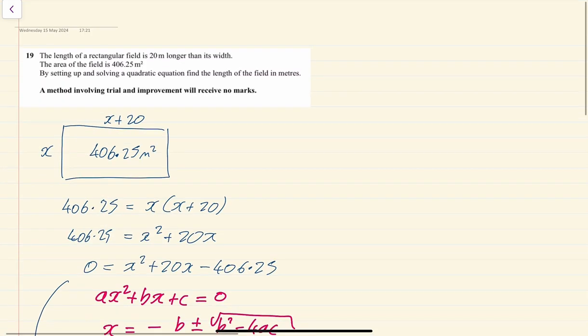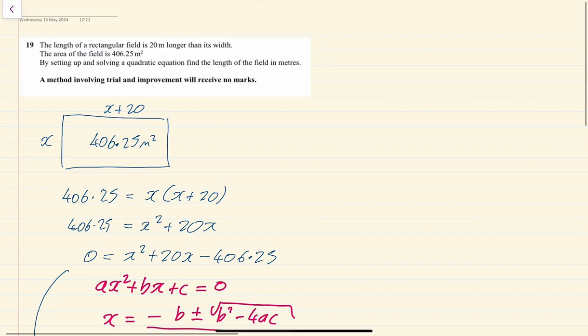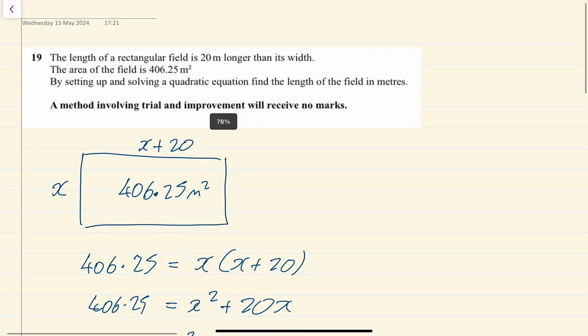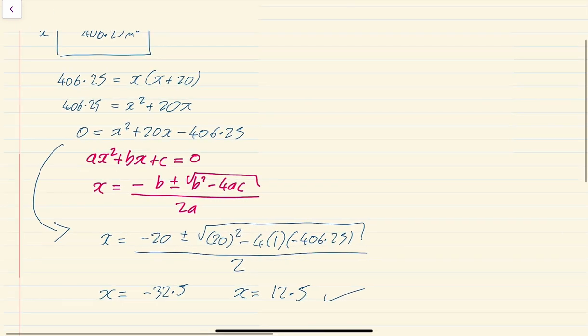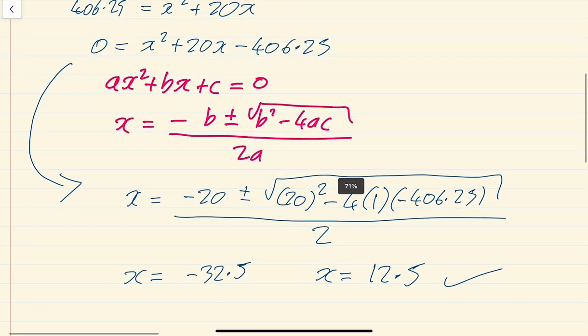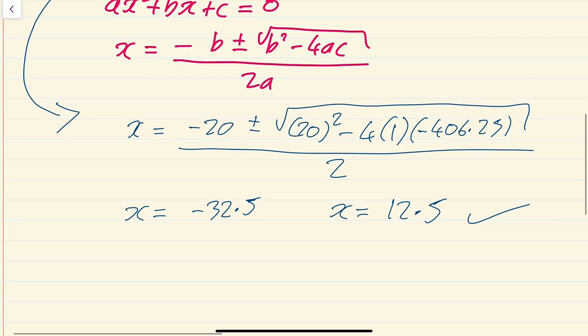So what does it say? By setting up and solving the equation, find the length of the field in meters. Right. A lot of people would not get the full marks for this. They would just say your x equals 12.5. Remember what x was—that was the width. So the width was equal to 12.5 meters.